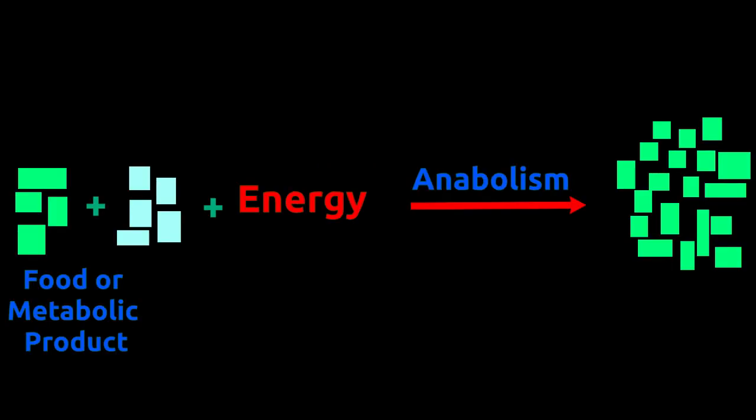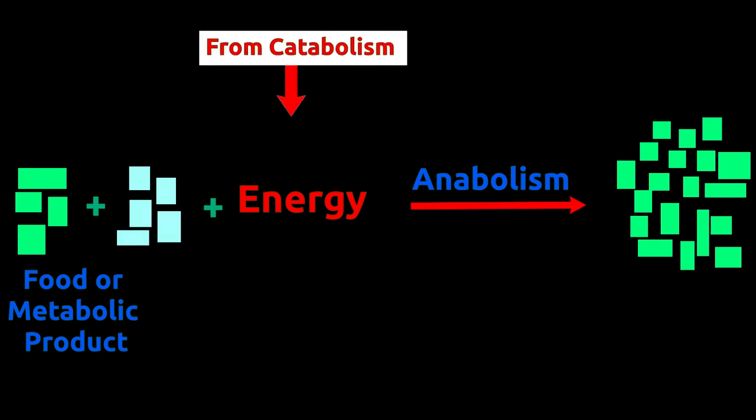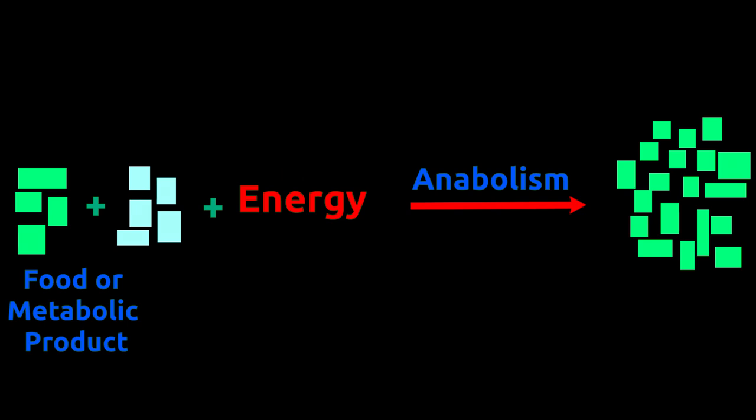Anabolism is the process by which components of food are combined to form new cell material. Our muscles grow because of anabolism. Anabolism requires energy which is supplied by catabolism.